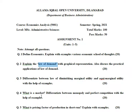The next question is: what is a market? Differentiate between monopoly and perfect competition with the help of examples. Through the lectures, you will understand what a market is, what monopoly is, and what perfect competition is. Otherwise, you can also search on Google.